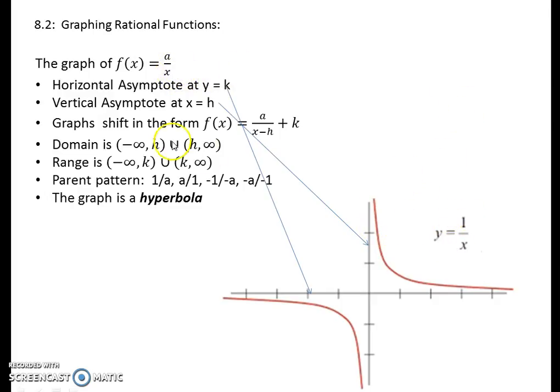For the graph of any constant over x, you're going to have a horizontal asymptote at y equals k. With no shift up or down, it defaults to the x-axis or at zero. There's a vertical asymptote at x equals h, which again with no shift defaults to the y-axis. So we have a vertical and a horizontal asymptote for this.